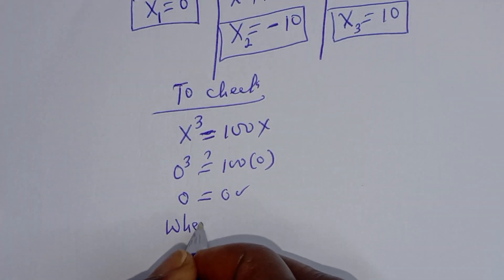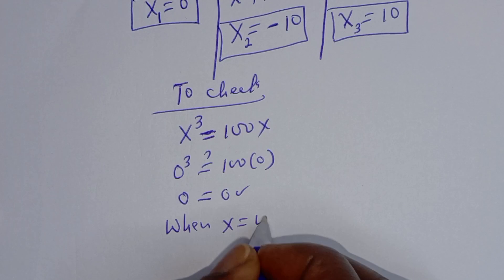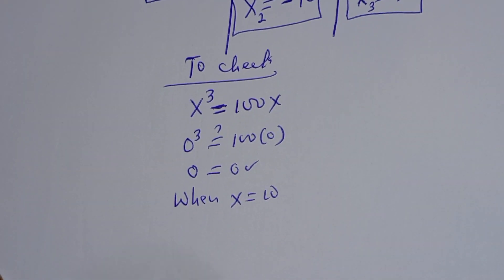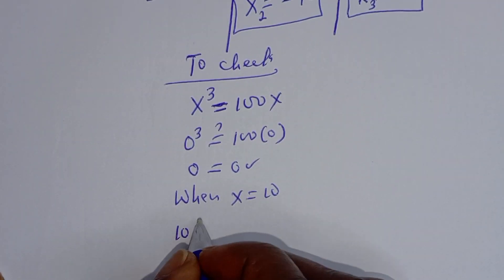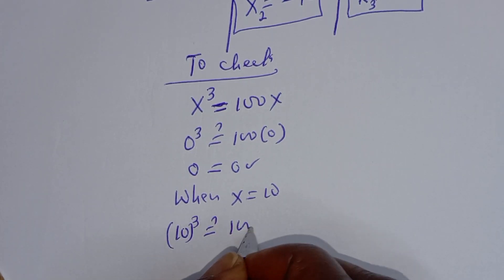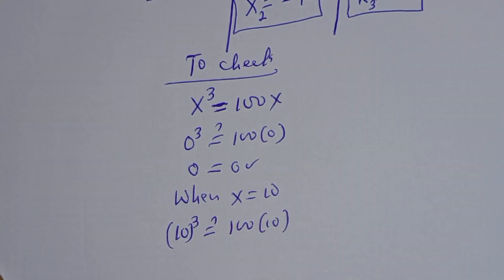Now when x is equal to 10, the left-hand side we have 10 raised to power 3 must be equal to 100 multiplied by 10.